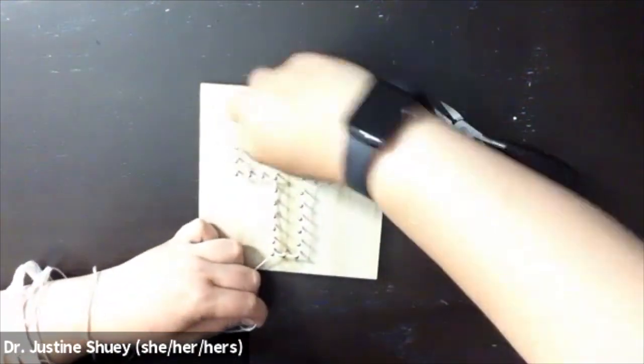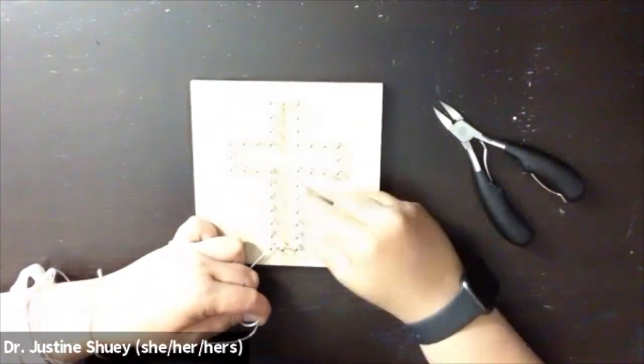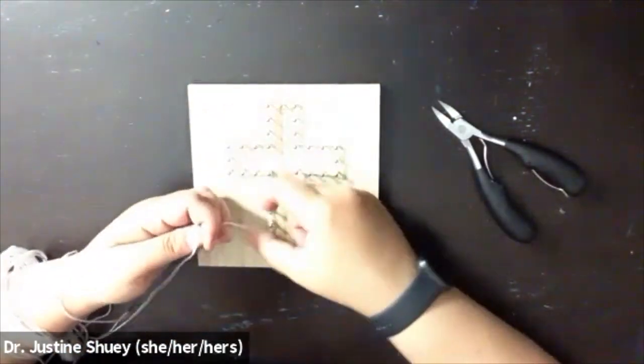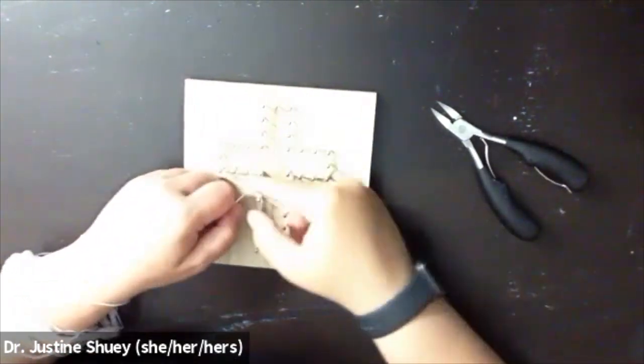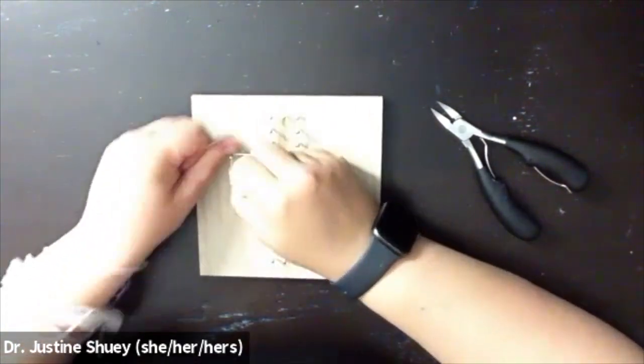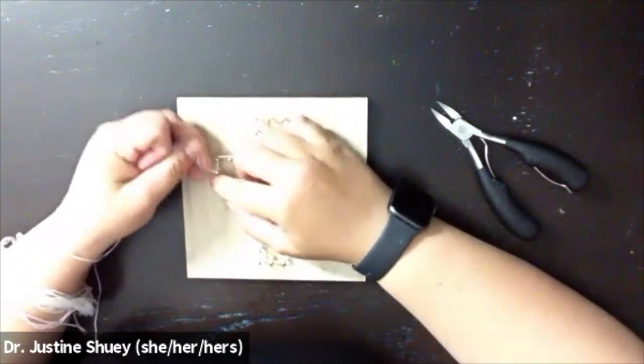So I'm starting by wrapping the nails, wrapping the string around the outside of each nail individually and then I'm going to wrap each string around the inside of each nail individually.